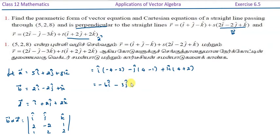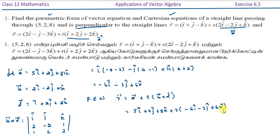Which is equal to minus 6 i cap minus 3 j cap plus 6 k cap. This is equal to c vector. Plus r vector is equal to a vector plus t into b vector cross d vector, which is equal to 5 i cap plus 2 j cap plus 8 k cap plus t into minus 6 i cap minus 3 j cap plus 6 k cap.